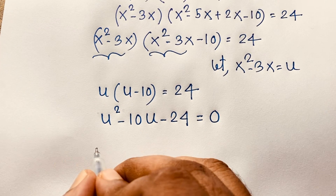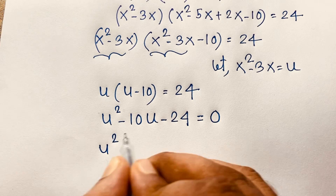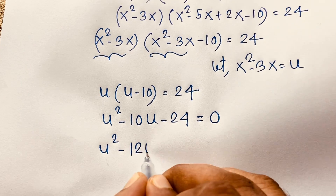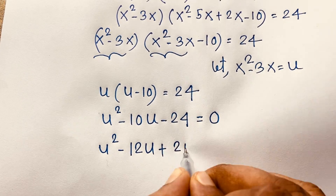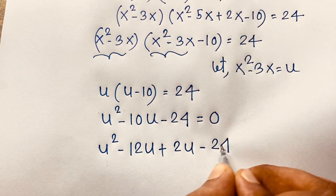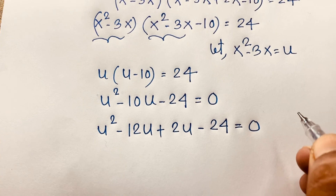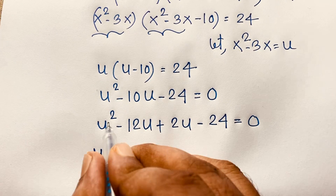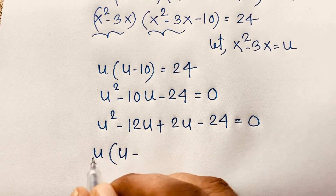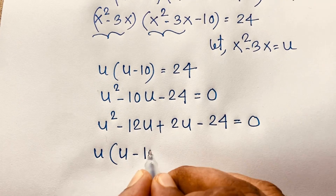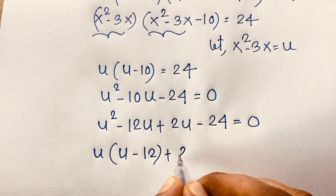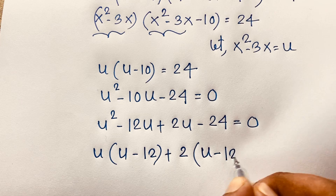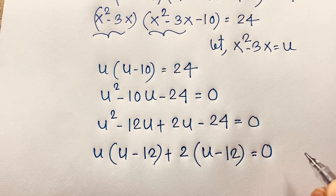So u squared minus 10u minus 24 is equal to 0. Now I apply the middle-term factor method to this quadratic equation. It will be u squared minus 12u plus 2u minus 24 is equal to 0. Taking u as common: u(u minus 12), and 2 as common: plus 2(u minus 12) is equal to 0.